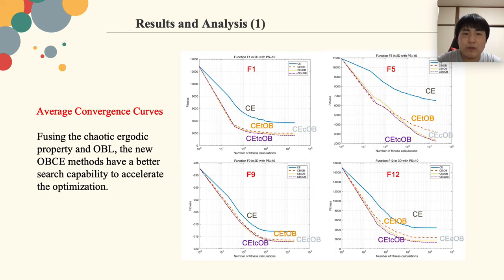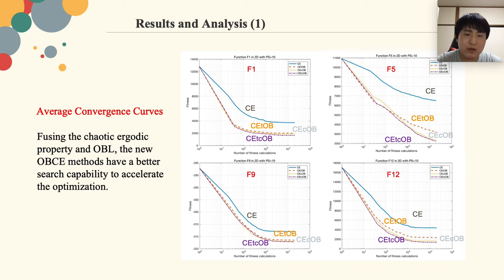It is straightforward to imagine that the computational cost of evaluating fitness values takes the most time in this algorithm. Therefore, the number of fitness calculations is an important evaluation index and metric. Since our proposed algorithms CETOB, CECOB, and CETCOB are triple, triple, and quadruple opposition-based searches respectively, while the conventional chaotic evolution algorithm is a paired comparison, in these average convergence curves we compare the optimization performance of these algorithms based on the same number of fitness calculations.